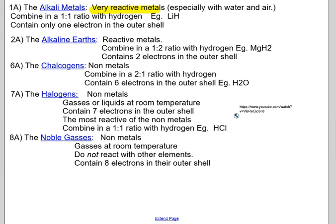Family 2A is the alkaline earth metals. The alkaline earth metals are also reactive, but not as reactive as the alkali metals. Families 3, 4, and 5 are not given special names. They are usually just called the boron, carbon, and nitrogen families.